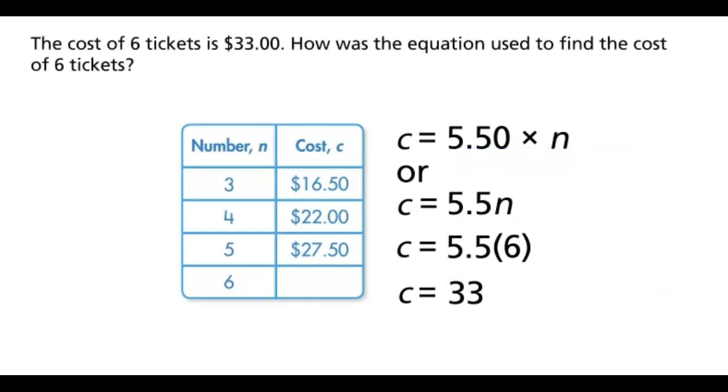The cost of 6 tickets is $33. How was the equation used to find the cost of 6 tickets? We could substitute the value for n or whatever number of n there will be. The cost for 6 tickets is $33. Just make sure you have the dollar sign.